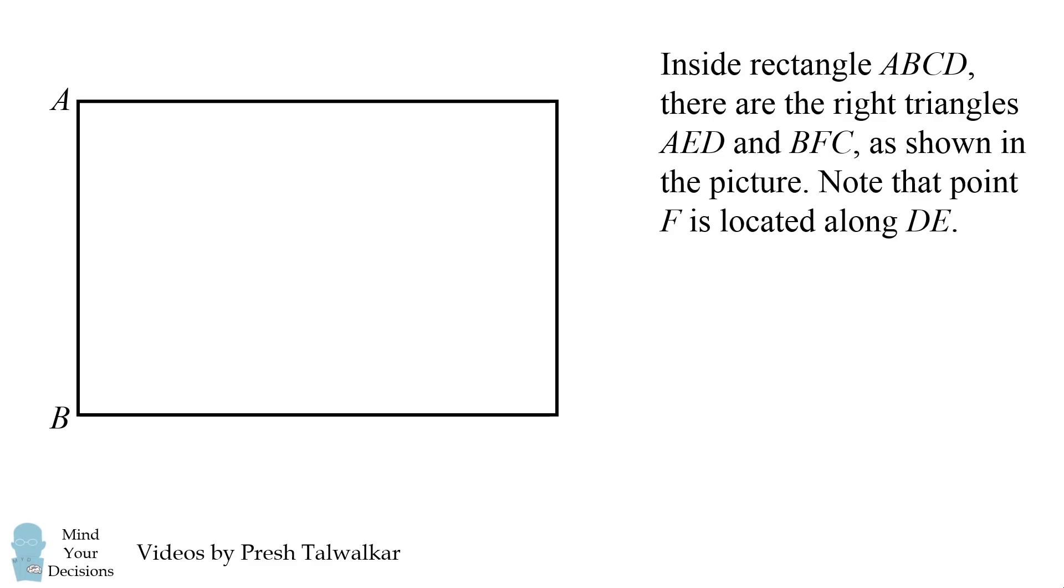Here's a fun geometry problem from Indonesia. Inside rectangle ABCD, there are right triangles AED and BFC as shown in the picture. Note that point F is located along DE.